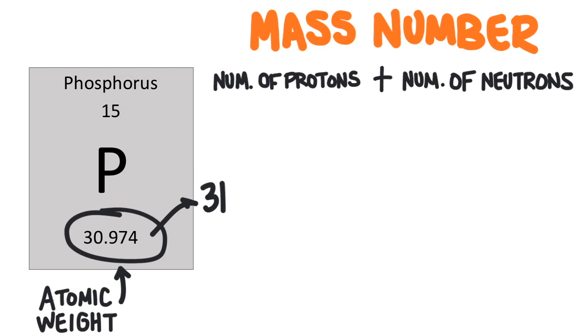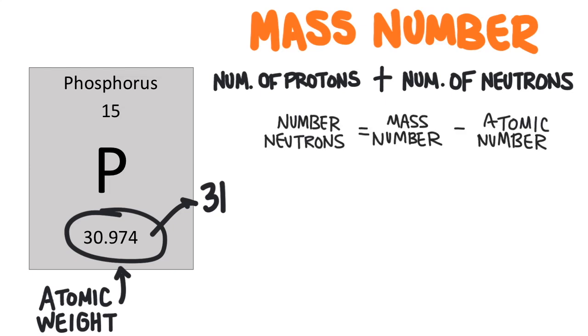Since the mass number is equal to the number of protons plus the number of neutrons, we can subtract the number of protons, that's the atomic number, from the mass number to determine the number of neutrons.